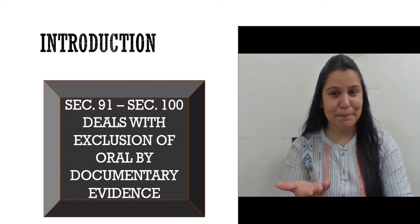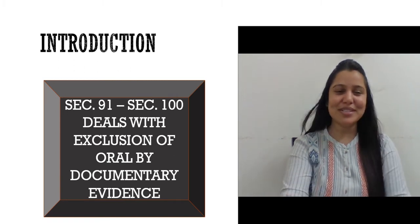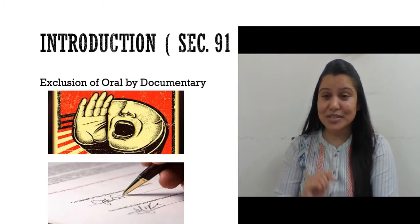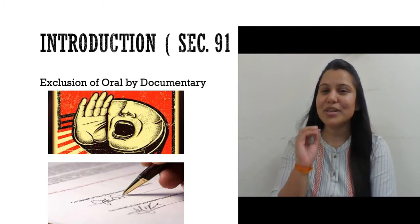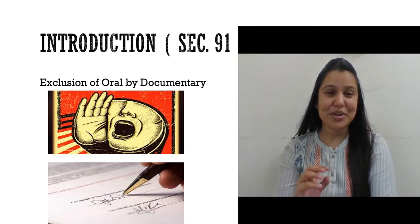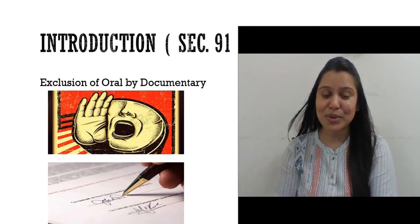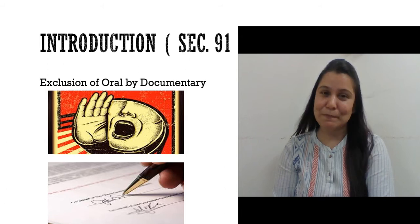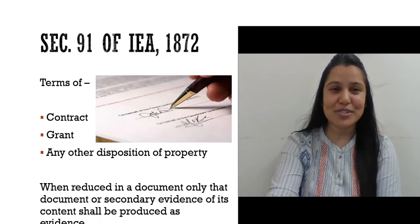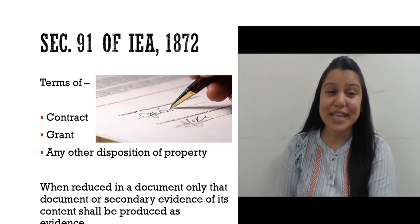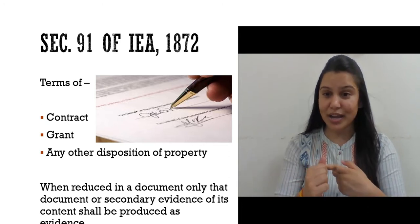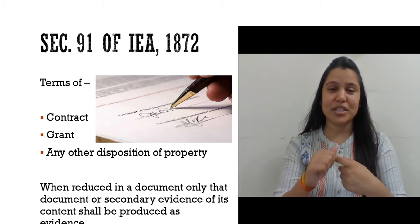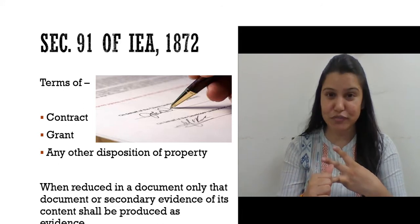Documentary evidence prevails here. Now, as you can simply see in the picture, somebody is speaking and the other is writing. When we read section 91, we will see that when it comes to oral evidence, it will be excluded by documentary evidence. Section 91 says: when the terms of any contract, grant, or disposition of property — these three things — are in question,